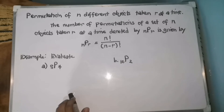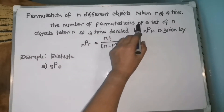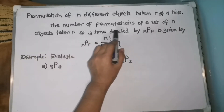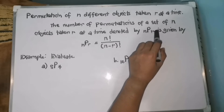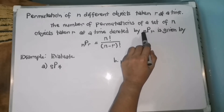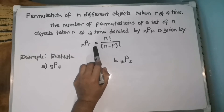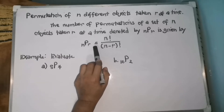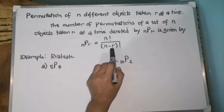First, let us study the concept, and then let us try to evaluate some examples to solve such problems. The number of permutations of a set of N objects taken R at a time, denoted by NPR, is given by the formula: NPR equals N factorial over the quantity of N minus R factorial.